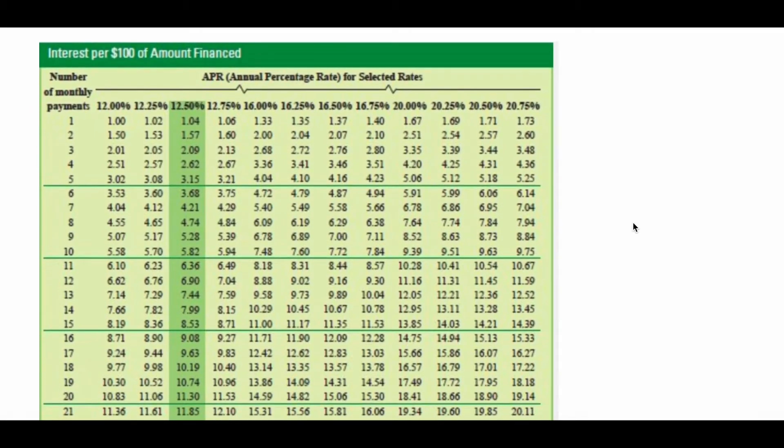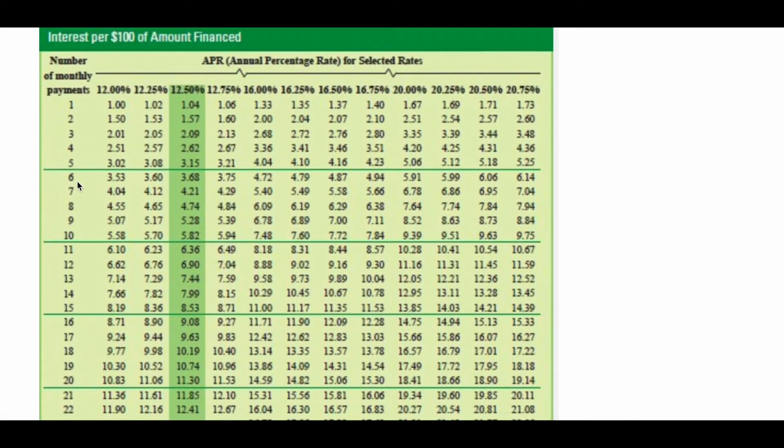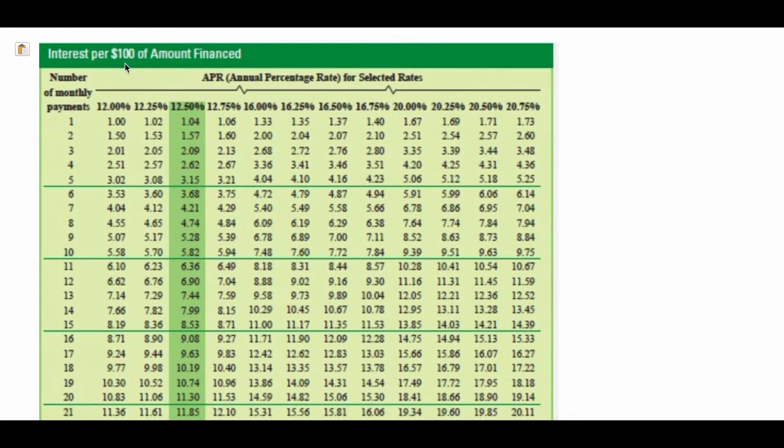Now the table looks like this. It has your APR on the top row and the number of monthly payments on the first column. This is interest per $100 of amount financed.